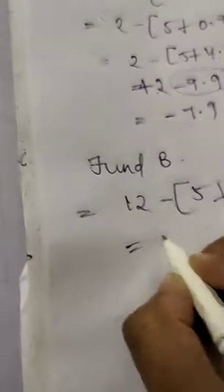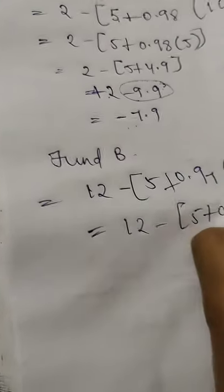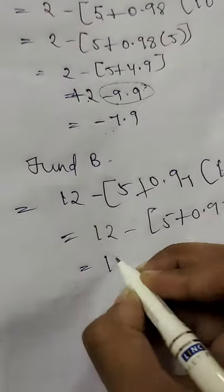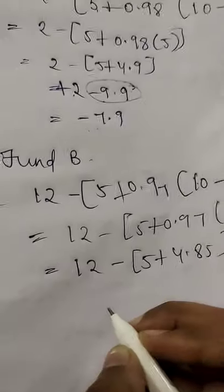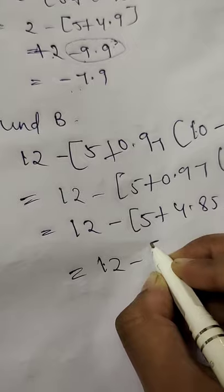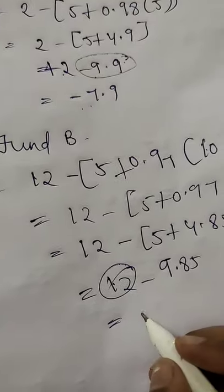So we get here as 12 minus 5 plus 0.97 into 5. Now we get here 12 minus 5 plus 4.85. Now we get 12 minus 9.85, so here 12 is greater so the sign will be plus. The answer will be 2.15 for Fund B.